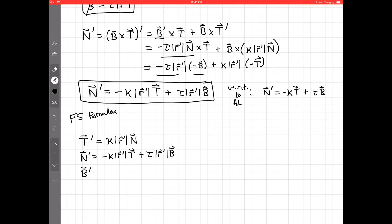n' is minus kappa speed t plus torsion speed b. And then b', oops, there's missing a prime there. b' is minus torsion speed n.